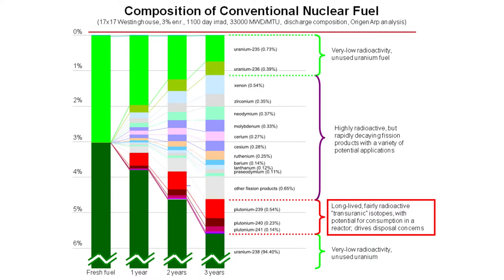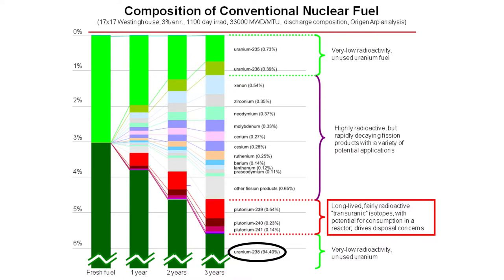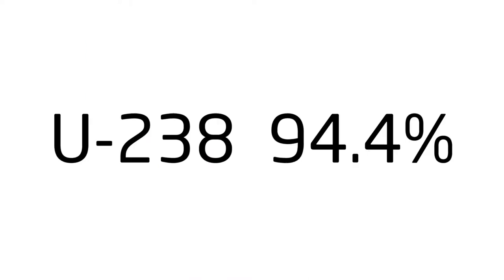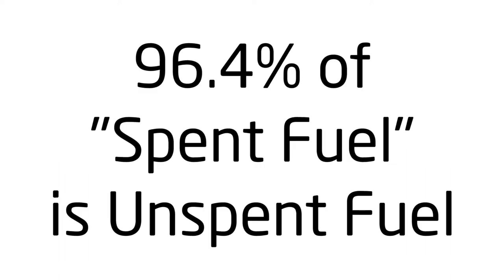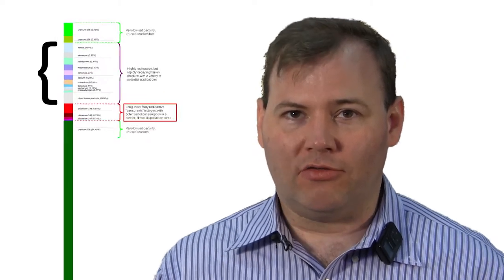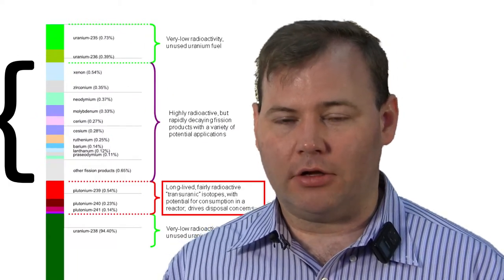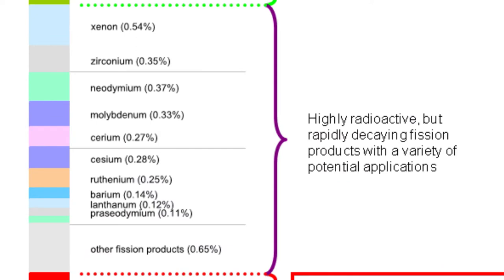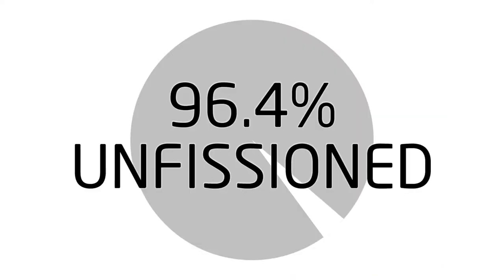These are the fission products as well as some of the transuranics. The hatching at the bottom reveals that most of the rod is still uranium-238 — the overwhelming majority is still this unburned uranium-238. Most of that potential energy remains to be exploited. In fact, the only fraction that has truly been burned is the fraction seen in those light pastel colors — the fission products. The remainder of the material is unrealized energy.